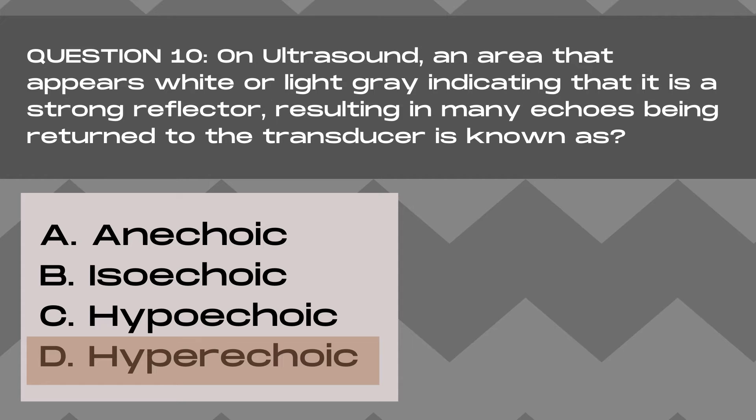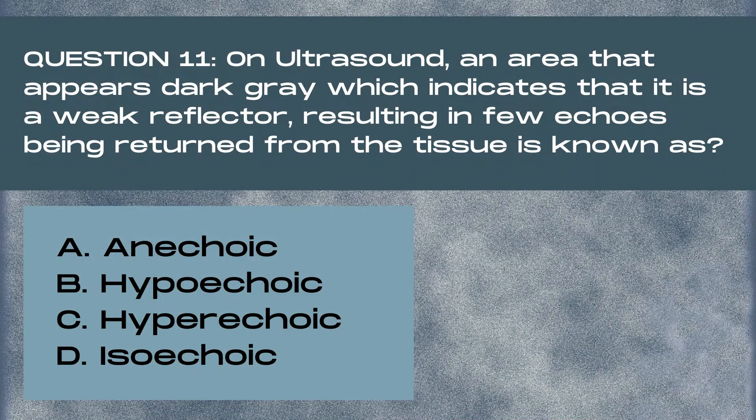On a breast ultrasound, hyperechoic masses tend to be benign. Although there are exceptions to every rule — I have seen a couple of breast cancers that had hyperechoic areas; they were hyperechoic and hypoechoic and very hazy with irregular margins. Hyperechoic areas are strong reflectors, resulting in many echoes being returned to the transducer.